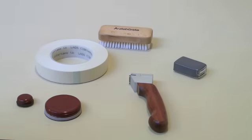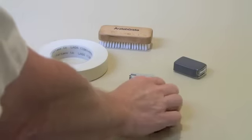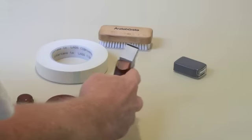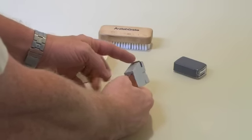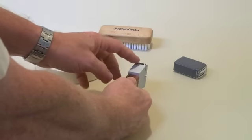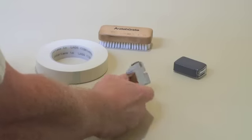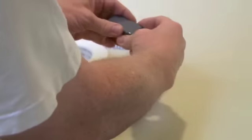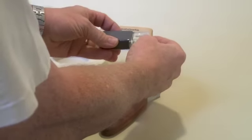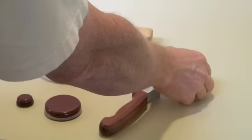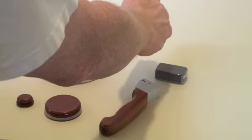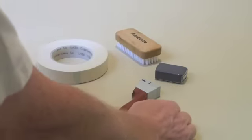Your BYK-Gardner crosscut testing kit consists of a crosscut test handle with a special blade. In this case we are using a 1mm spacing 6 cut blade, a set of magnifiers that help us check out the cut after we have completed it, and a brush to brush off the cut area.